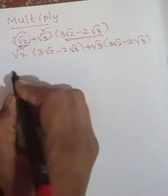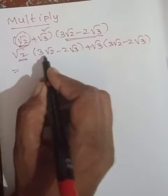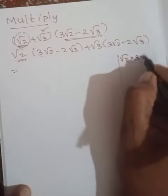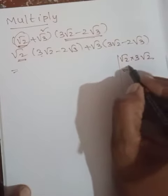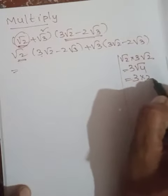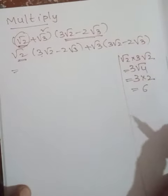Now look at this. First of all, √2 into 3√2. I'll show you here: √2 × 3√2 equals 3 × √2 × √2, which is 3√4, which equals 3 × 2 = 6.